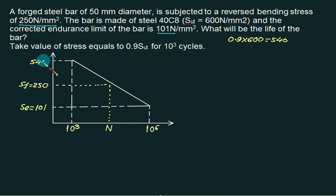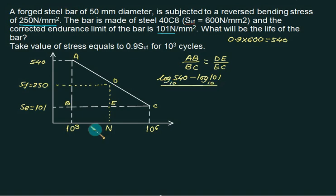Take this value equal to 540. You can apply similar triangles ABCDE. The equation is AB divided by BC same as DE divided by EC. This value is log of 540 to the base 10 minus log 101 to the base 10. The denominator is always fixed: 6 minus 3, that equals 3.